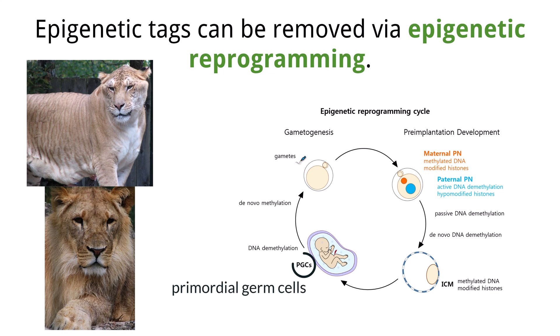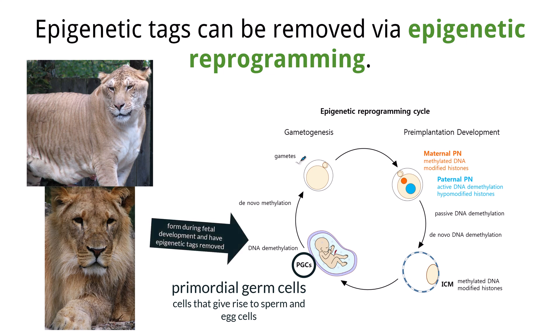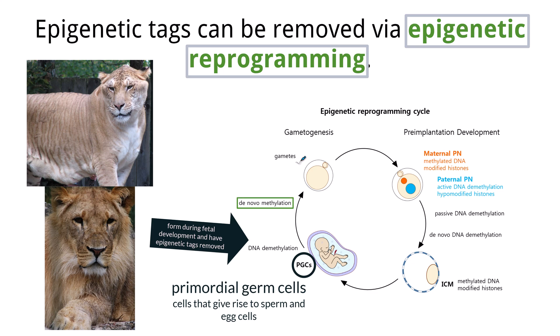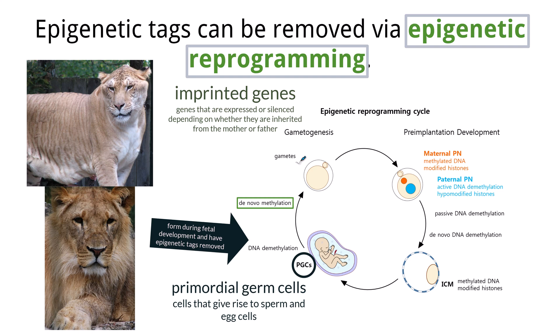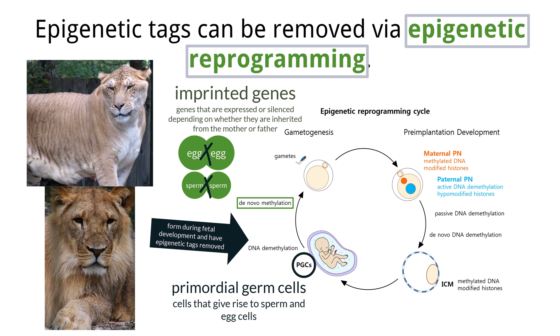Primordial germ cells, or PGCs, are cells that give rise to sperm and egg. These form during fetal development and have their epigenetic tags removed by epigenetic reprogramming. In order to produce a viable zygote, some of the DNA in developing sex cells is remethylated. Imprinted genes are those that have been silenced in only one of the two copies — either maternal or paternal. This was discovered by scientists who tried to combine the nuclei of two egg cells, or nuclei of two sperm cells, to produce a zygote. None of the cells developed, even though there was enough genetic material. We now know that genes from egg and sperm are imprinted differently — imprinted genes in the egg are methylated differently than the imprinted genes in the sperm.